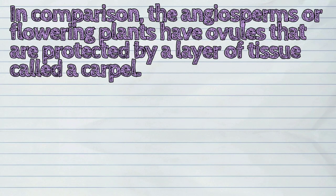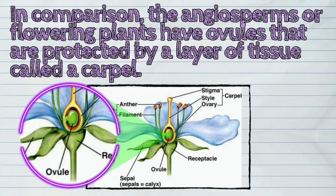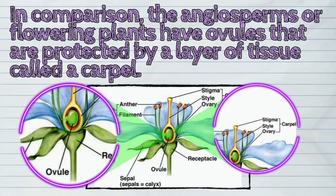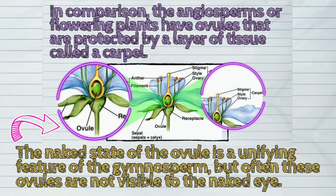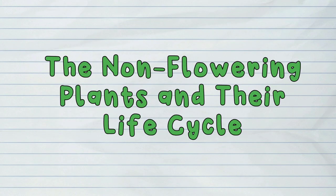In comparison, the angiosperms or flowering plants have ovules that are protected by a layer of tissue called a carpel. The naked state of the ovule is a unifying feature of the gymnosperm, but often these ovules are not visible to the naked eye. So now, let us study some examples of non-flowering plants and their life cycle.